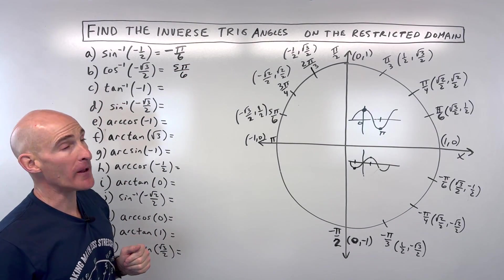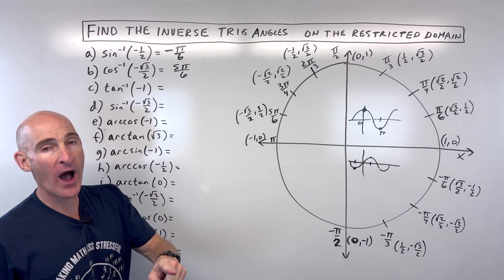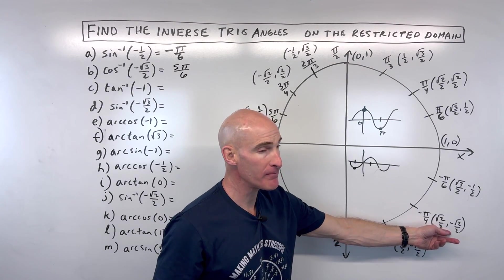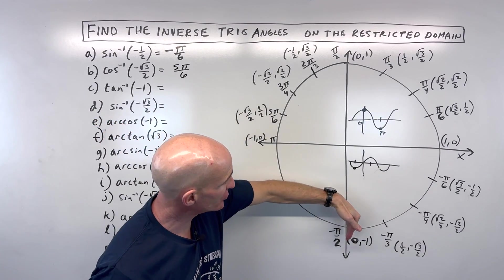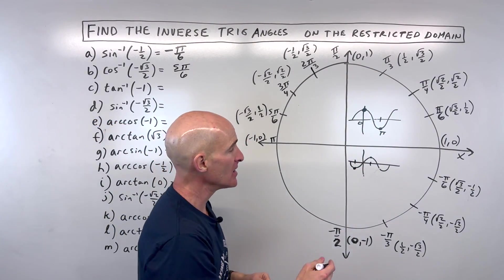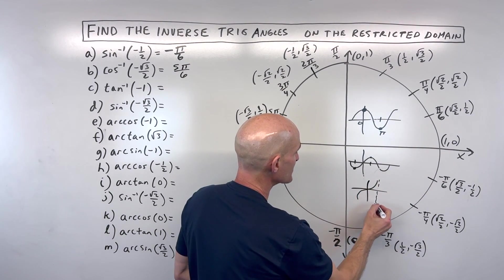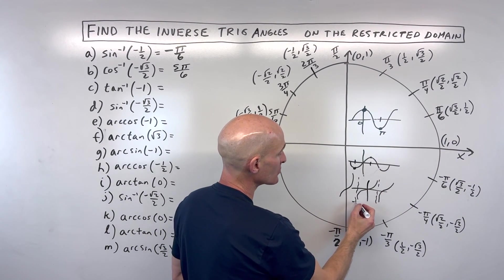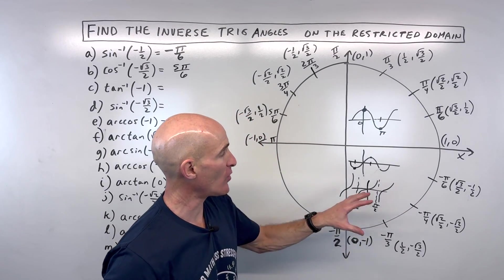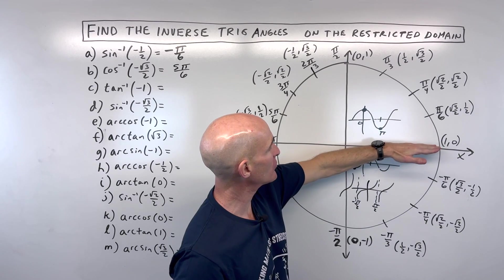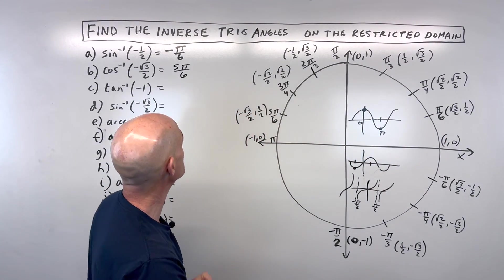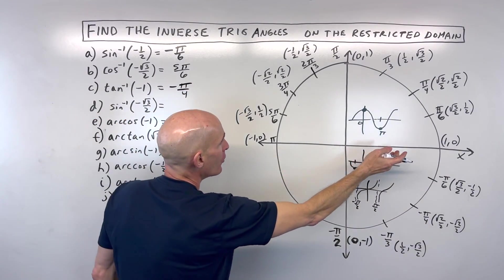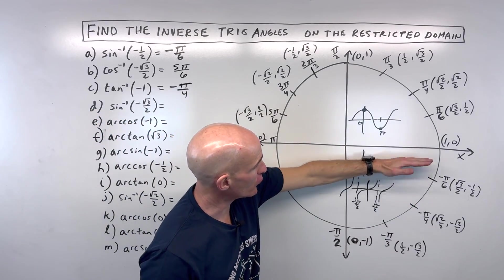For letter C: what's the tangent inverse of negative one? Tangent is really asking where is the ratio of y divided by x equal to negative one. That's going to occur where negative root two over two divided by positive root two over two gives negative one. It would also occur in another quadrant, but for tangent the restricted domain is from negative pi over two to positive pi over two — same as sine. The tangent graph has asymptotes at negative pi over two and positive pi over two and repeats, failing the horizontal line test unless restricted. So sine and tangent both go from negative pi over two to positive pi over two; cosine inverse is different, from zero to pi. The answer is negative pi over four — don't say 315 degrees or seven pi over four; when you're in the fourth quadrant, make it a negative angle.